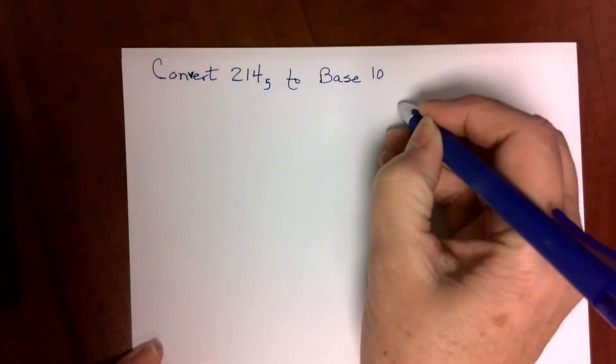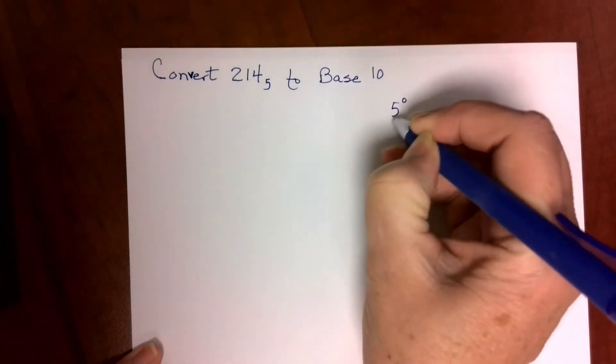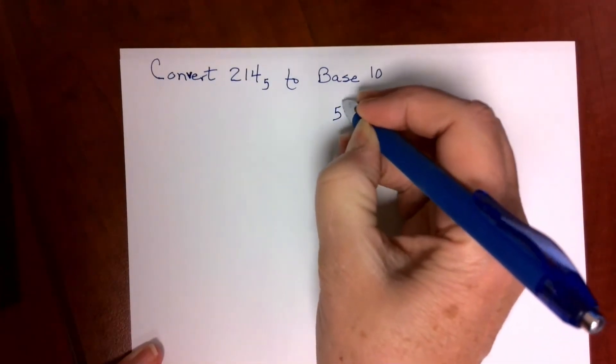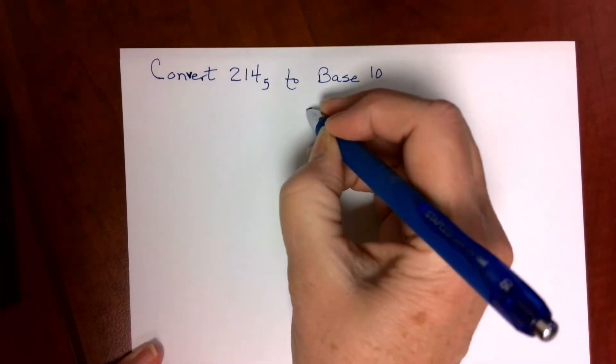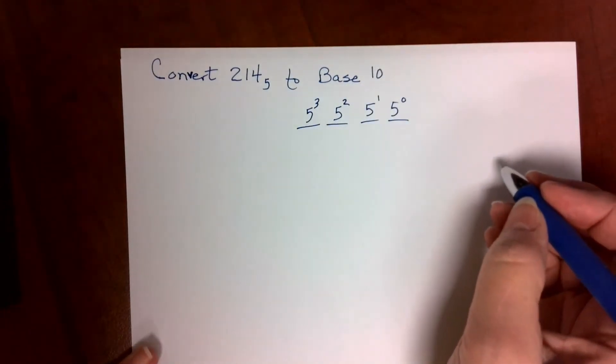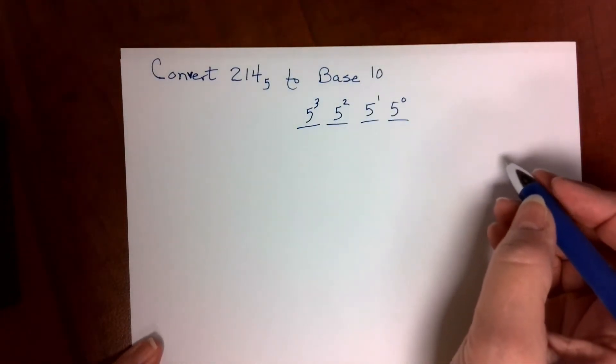Since it's base 5, the place values will be 1s, 5s, 25, and then 5 to the 3rd, 125, and so on.